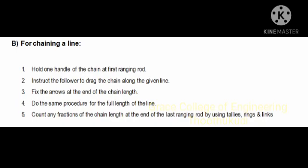Two people act as surveyor and follower. The surveyor holds the chain at the first ranging rod. They drag the chain along the line, keep track of the chain length, and fix the arrows at the end of each chain length.